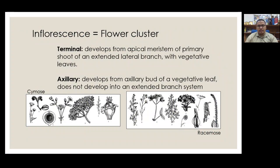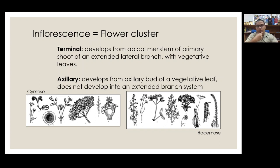An inflorescence is a branch system — not just a single stick, but a structure with a lot of branching. It is a branch system that serves the formation of flowers, meaning it bears flowers. A flower cluster is a fine definition. There are two basic positions where flower clusters can develop.